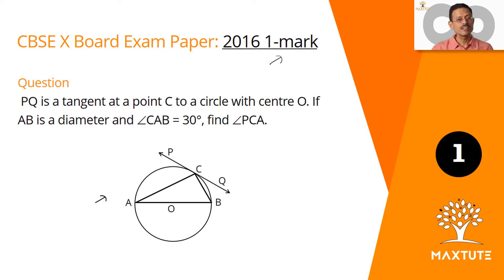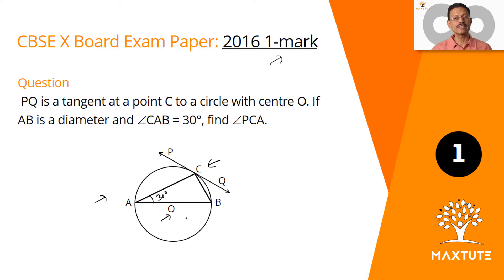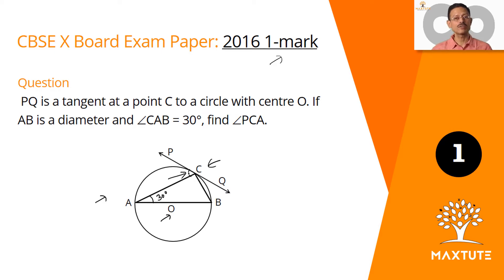Let's read the question. PQ is a tangent at a point C to a circle with center O, so PQ meets the circle at C. AB is a diameter and angle CAB measures 30 degrees. What we need to find out is the measure of angle PCA — this is the angle we need to find.